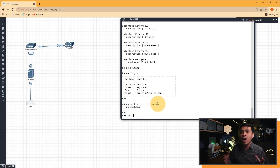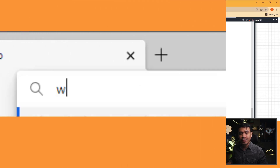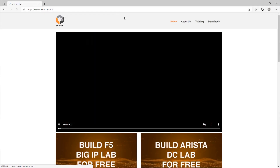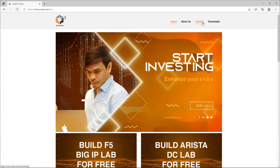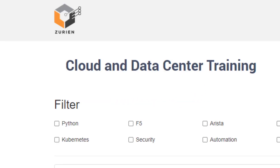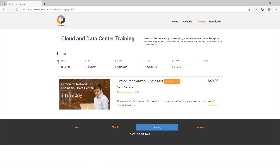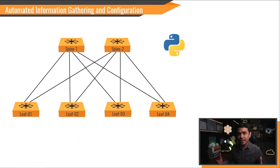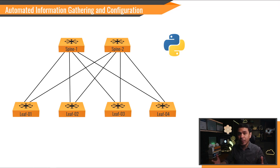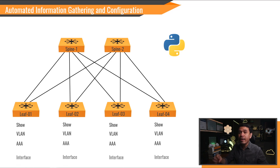You can automate provisioning up to hundreds of switches. But how? Open a web browser and type www.zurian.com. This will take you to the Zurian website. Click training, and this will redirect you to the training webpage. Here you will see various courses — you can filter Python-related courses, such as Python for Network Engineers, Data Center, or Use Cases. So I want to get device information or network statistics from multiple, or even hundreds, of network devices. We can not only run simple show commands and get the output, but we can also get specific information from the output easily, such as serial number, hostname, or specific IP address. We can also push configuration as well, like VLANs, AAA configuration, interface configuration, and many more.